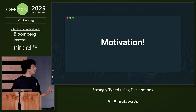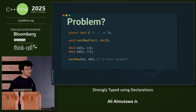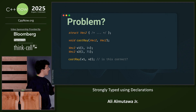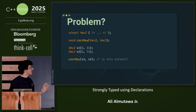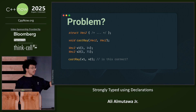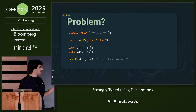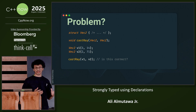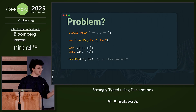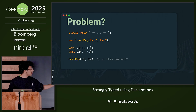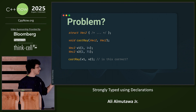I'm going to start with a motivation. Imagine you're working with a graphics library, and it has a struct vec2 of some sort, and it has a function called castray. So all you can see is the declaration and the type. Castray is supposed to cast a ray from a point into a direction. You have two vectors, v1 and v2. Once you see this call in your client code, you have to ask yourself, is this really correct?